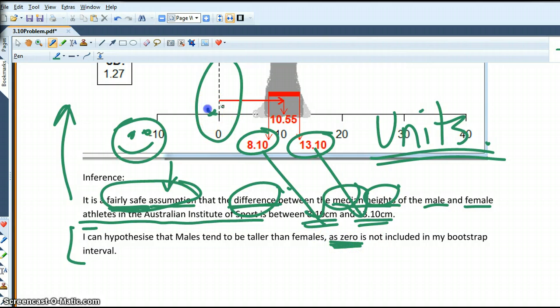Now, if we had values here, we wouldn't be able to say this. We wouldn't be able to make the call. So, this is an example of a fairly safe assumption that the difference between them is between this and that and I can make it because zero is not included in my bootstrap interval. Also, here we've said the difference, but we didn't actually say in that sentence who was taller. So, here I can hypothesise that males tend to be taller than females has actually filled that need.